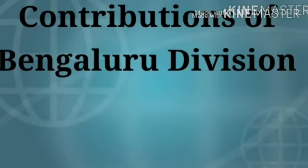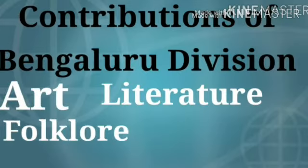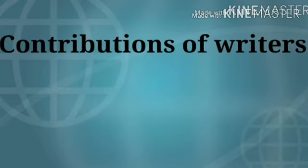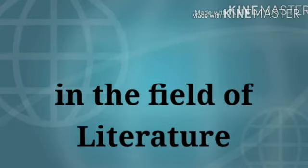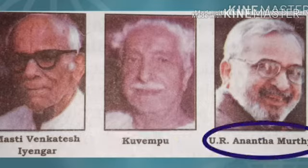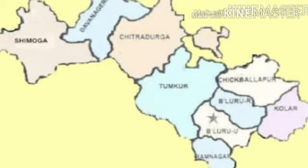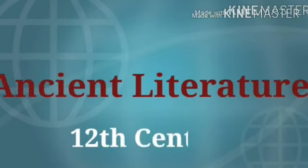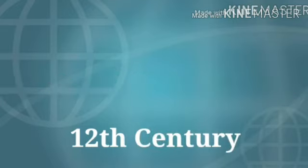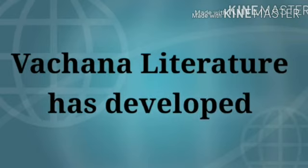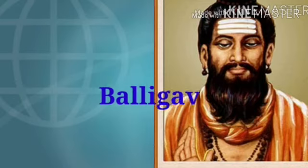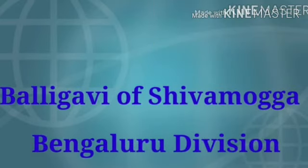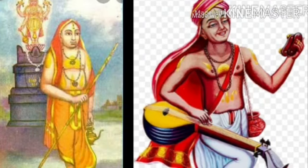Now let us study the contributions of Bengaluru division in the fields of art, literature, folklore, theatre and dance. Three important writers who received the Jnanapeeta Award in Kannada literature — Kuvempu, Masti Venkatesha Iyengar and U.R. Ananthamurthy — belong to Bengaluru division. In the 12th century, Vachana literature developed, and famous Vachanakaras Akka Mahadevi and Allama Prabhu belong to Balligave of Shimoga district. The famous Dasas from Bengaluru division are Sri Purandaradasa and Paadaraya.